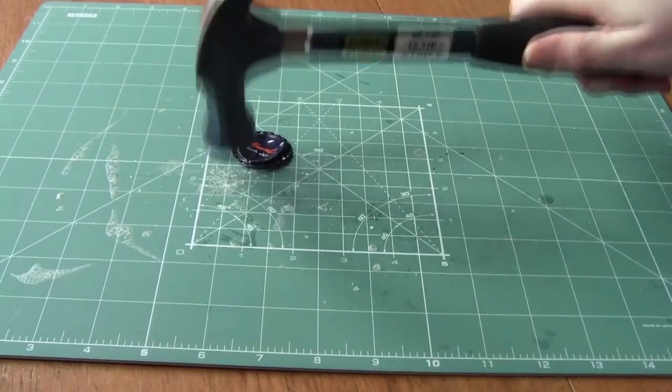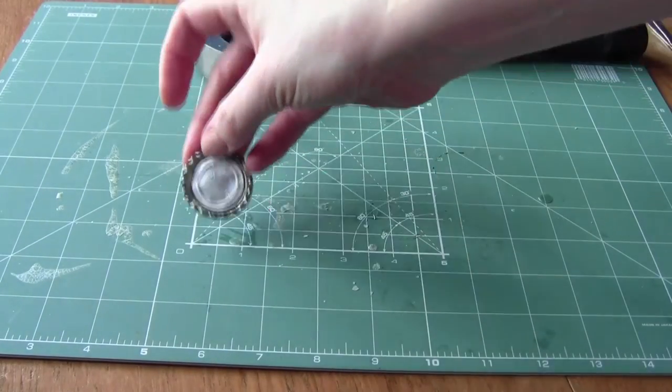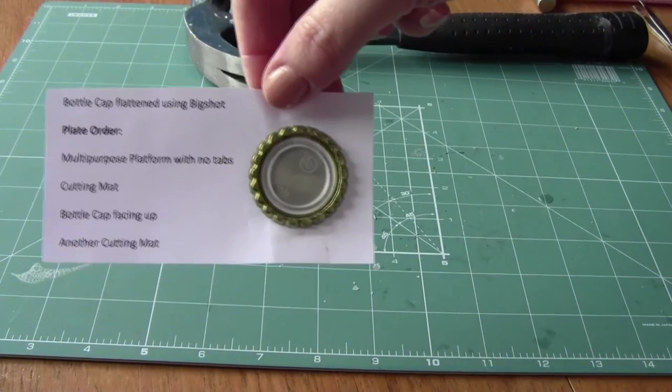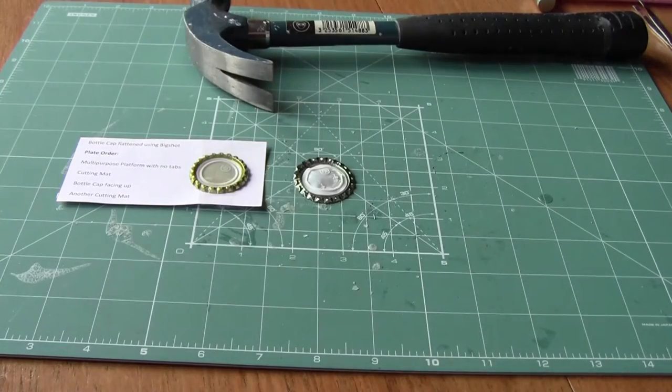It's really important that you work on a craft mat here or you're going to damage your table. With the hammer method you'll never get a completely perfect bottle cap flattened, so Debbie has used her die cut machine to flatten hers, but if you're cautious we still recommend the hammer method.